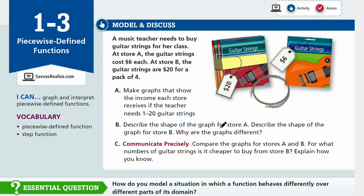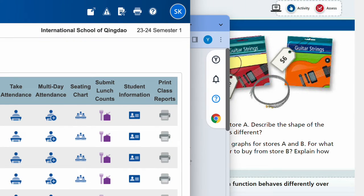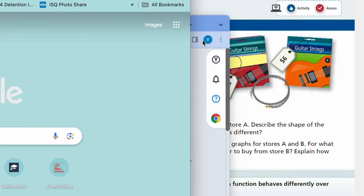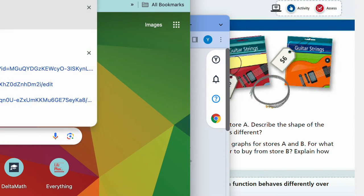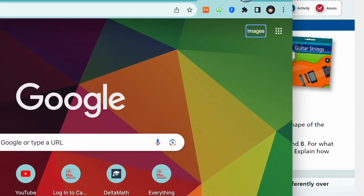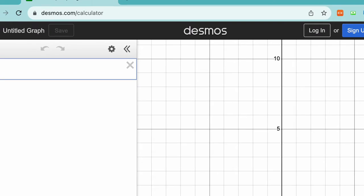Part A: make graphs that show the income each store receives if the teacher needs 1 to 20 guitar strings. We don't know how many the teacher would need, but we know she'll need 1 to 20 guitar strings. So we can make a graph using technology. So let's use desmos.com slash graphing or slash calculator.